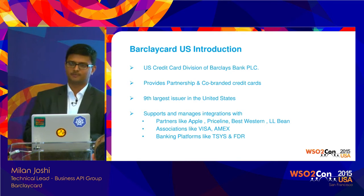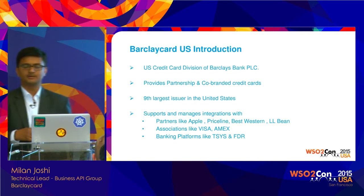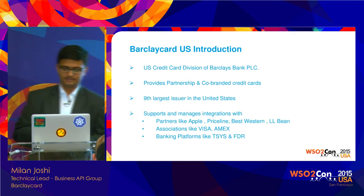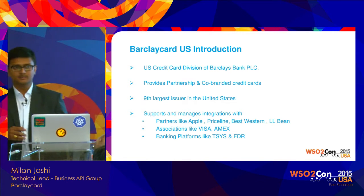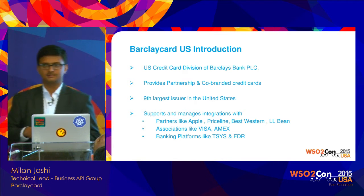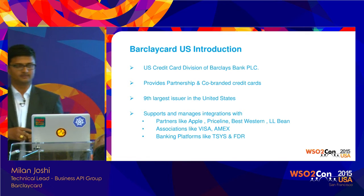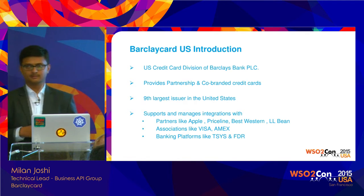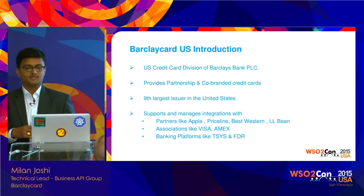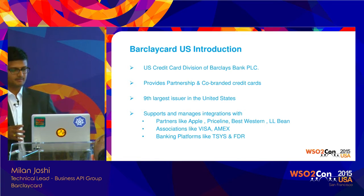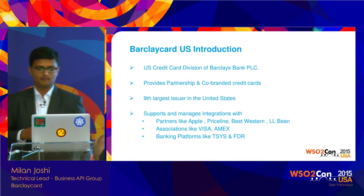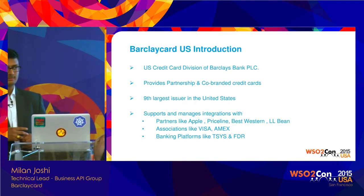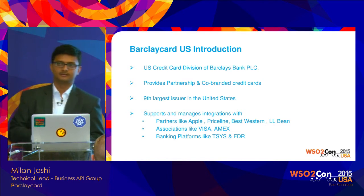Barclaycard US primarily provides partnership and co-branded credit cards — partners like Apple, LL Bean, and US Airways. It is currently the ninth largest issuer in the United States and growing fast. As part of our integrations, we work with partners like Apple and Priceline, and associations like Visa and AmEx. For systems of record, we integrate banking platforms like TCS and FDR (First Data Record).